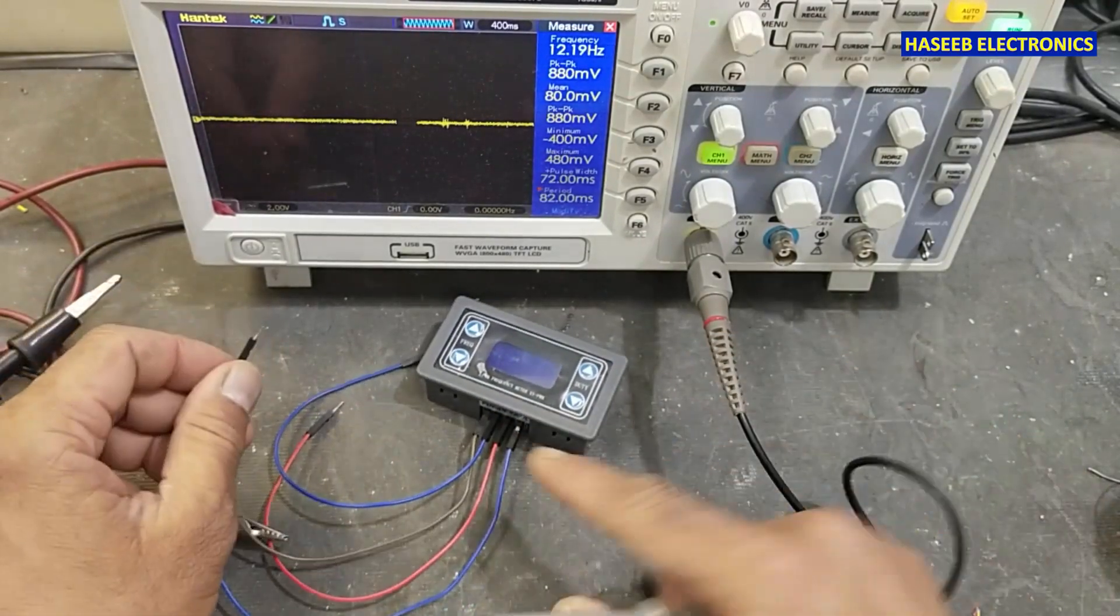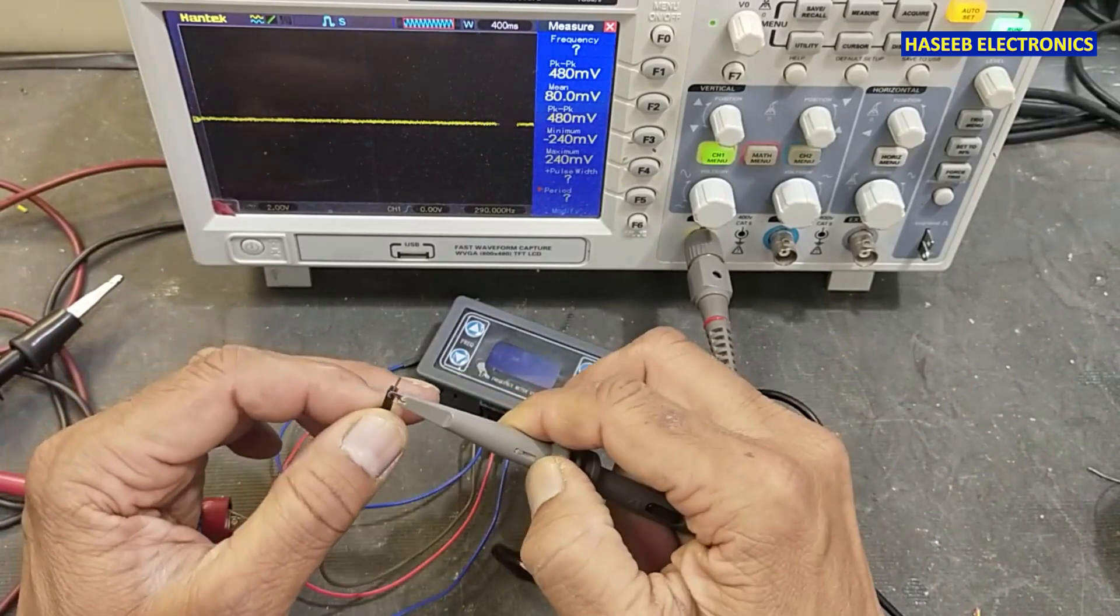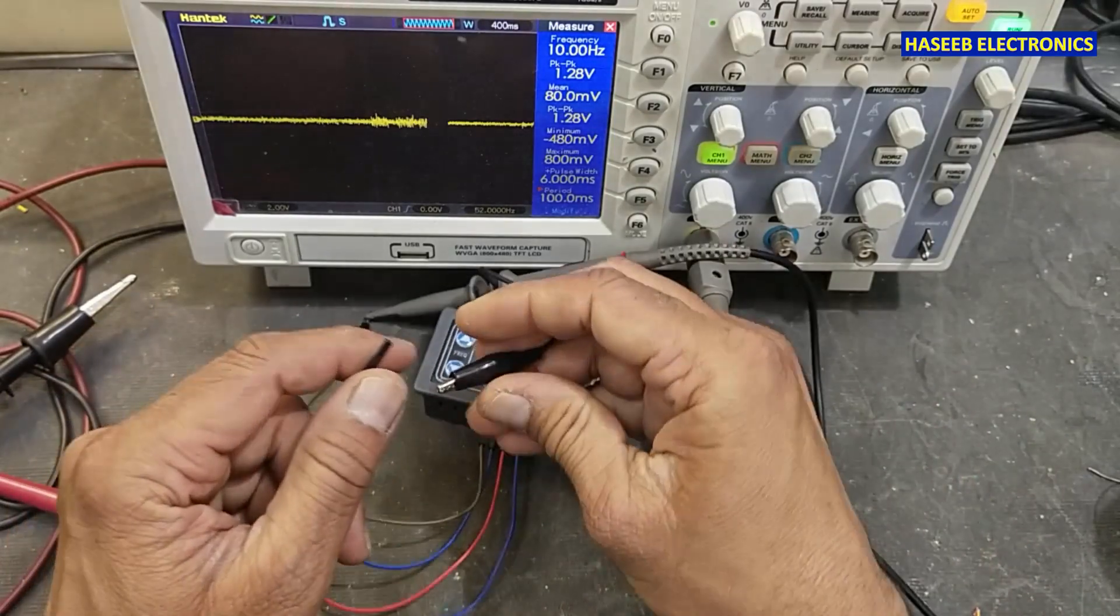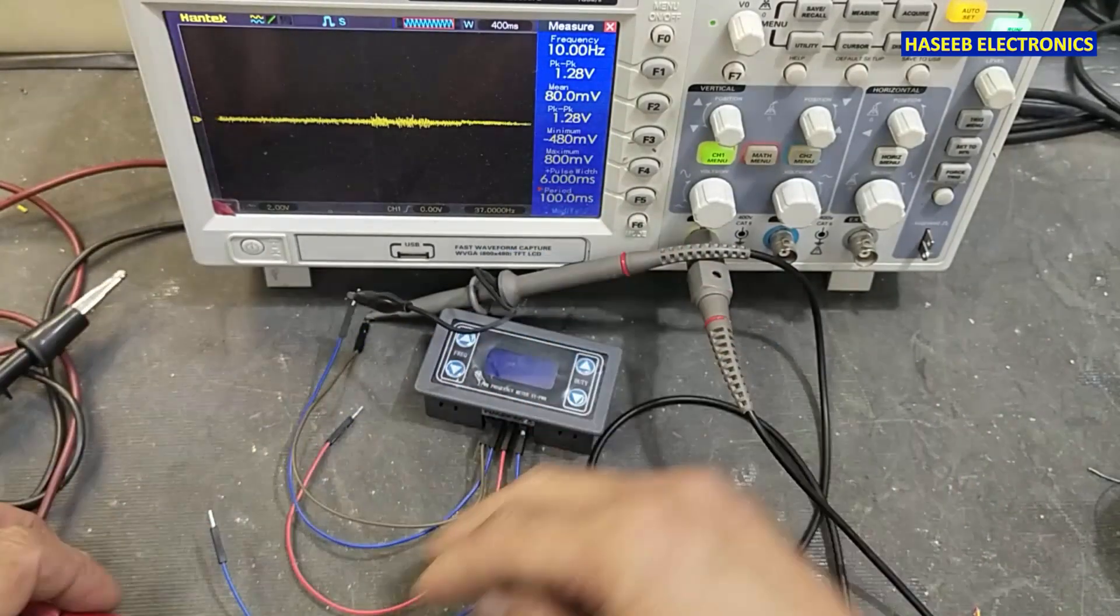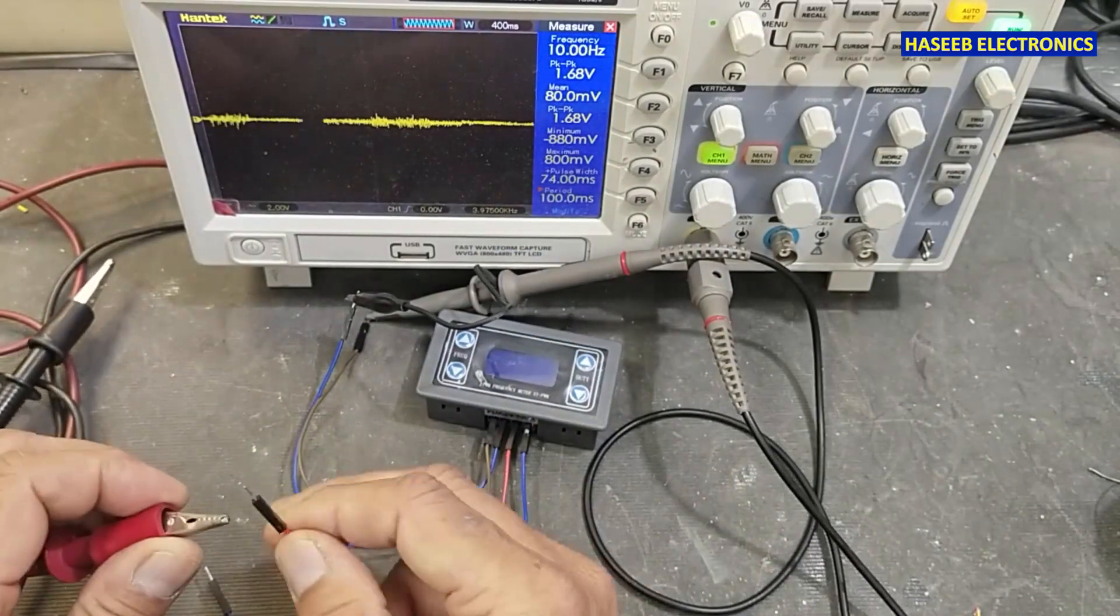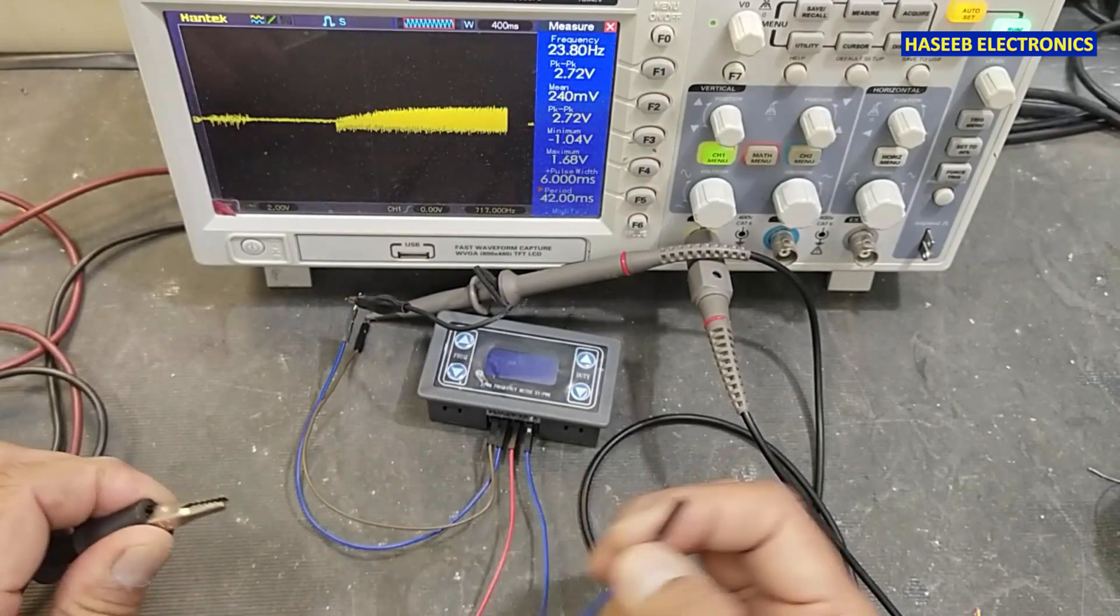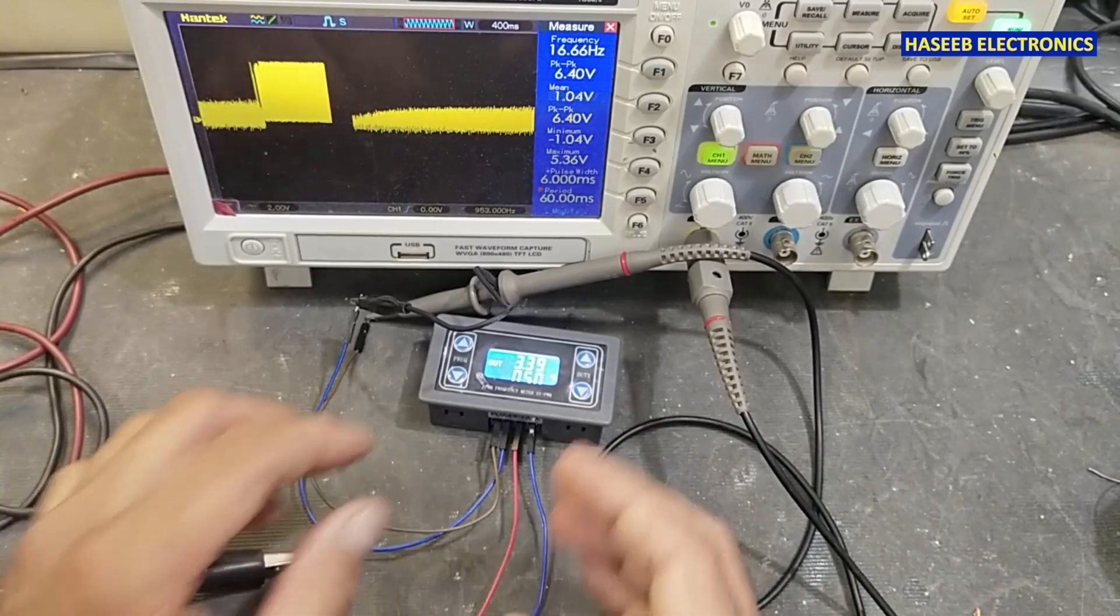This is PWM output, the last pin here. We will connect to the signal out and this is signal return. We will connect positive voltage here and negative voltage here.